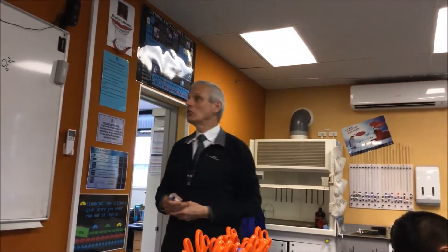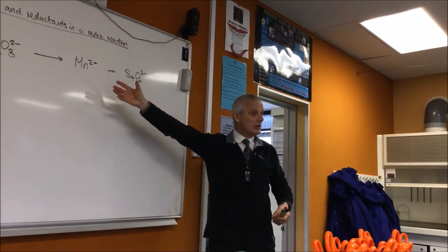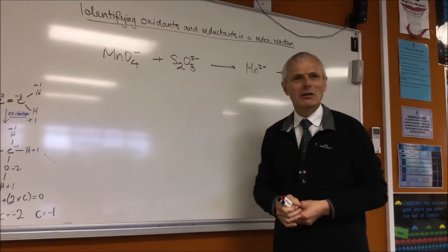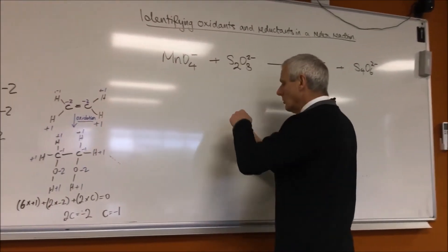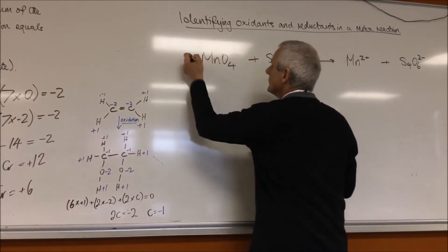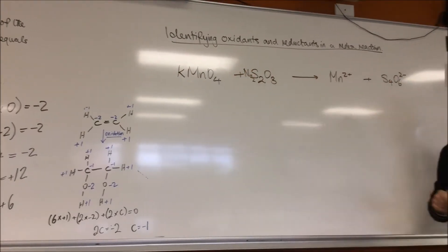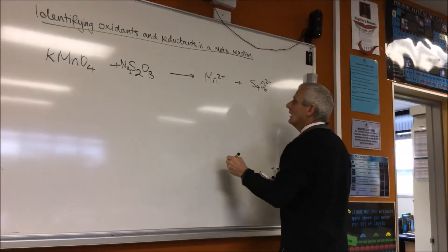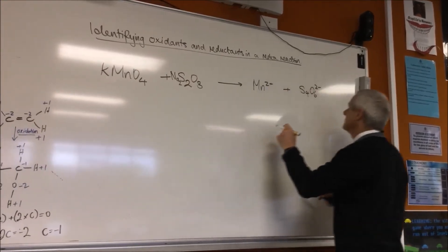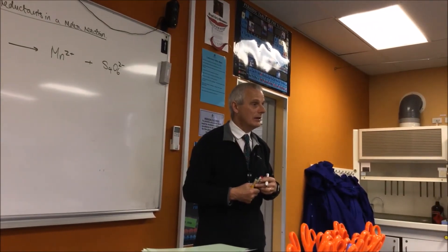The very first thing you need to do, the thing is I've simplified it for you because I've taken out all the spectator ions. It could well be that you'll have potassium here. Should we put that in as well? Let's go the whole hog. And generally, you would get something like KMnO4 and Na2S2O3. It doesn't matter if it doesn't balance. That's the whole point.